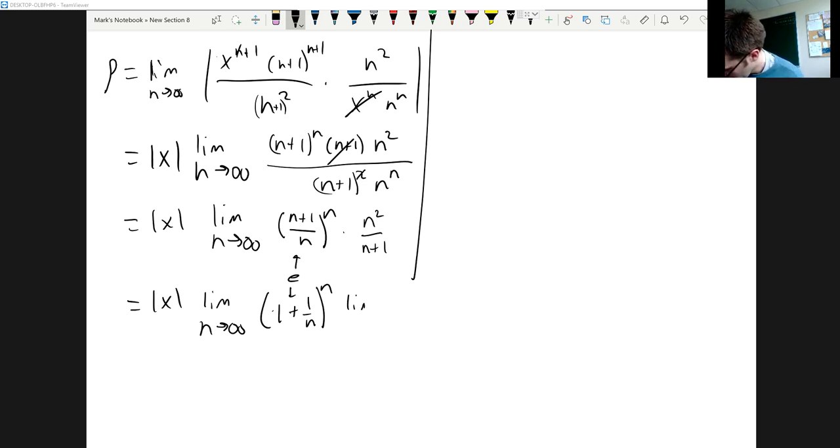Multiplied by the limit as n goes to infinity of n squared over n+1, and that one is going to be infinity over infinity. But if we apply L'Hopital's rule we will have limit as n goes to infinity of derivative of the top would be 2n and derivative of the bottom would be 1, and so notice you'll get infinity.